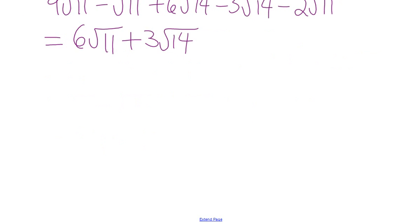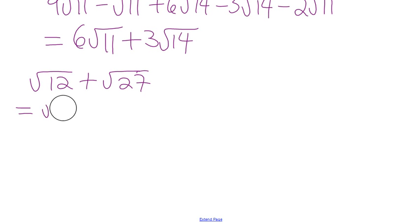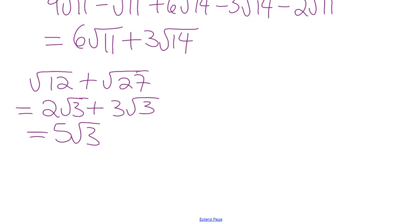Now a problem comes: what about root 12 plus root 27? Are they like terms just the way they're sitting there? No. But can they be simplified? Yes. Root 12 is 2 root 3. Root 27 is 3 root 3. So 2 root 3 plus 3 root 3 is 5 root 3. We may have to change from entire radicals to mixed radicals to find like terms. Root 12 plus root 27 you can't do directly, but when converted to mixed radicals they both become root 3s and we can add those.